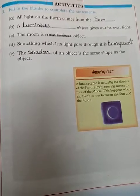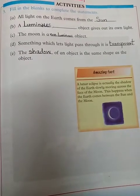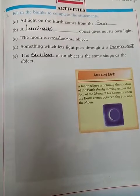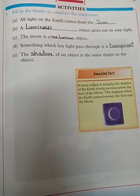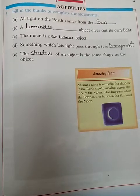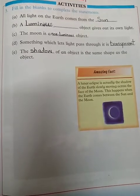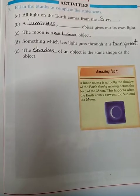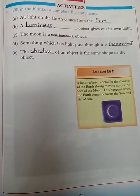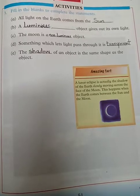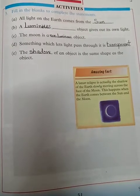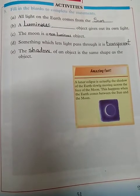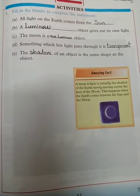For blank D: 'Something which lets light pass through it is ___.' The thing through which light can easily pass — what is it called? Transparent. Write 'transparent' here. Next blank: 'The ___ of an object is the same shape as the object.' The answer is shadow — a shadow is just like the shape of its object.